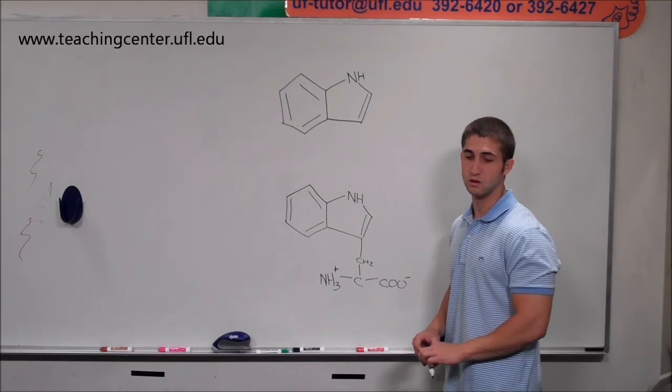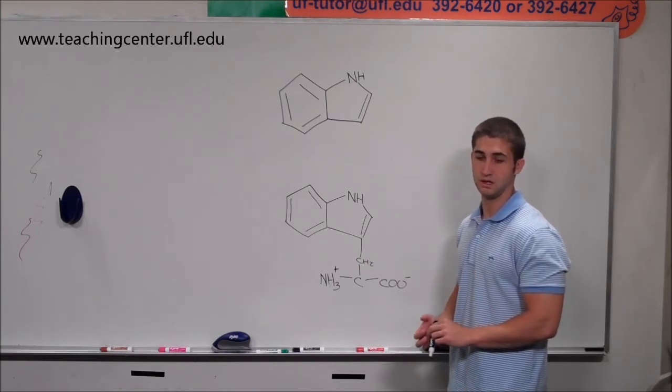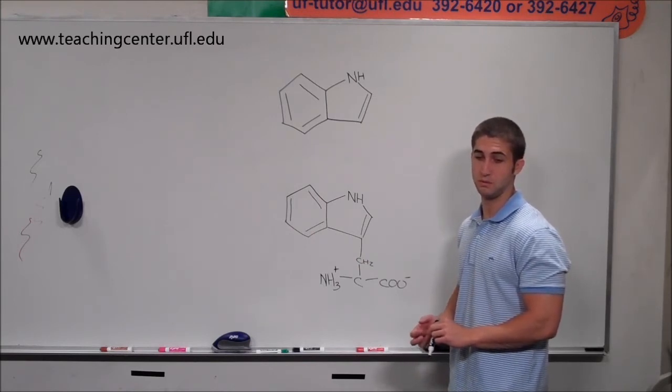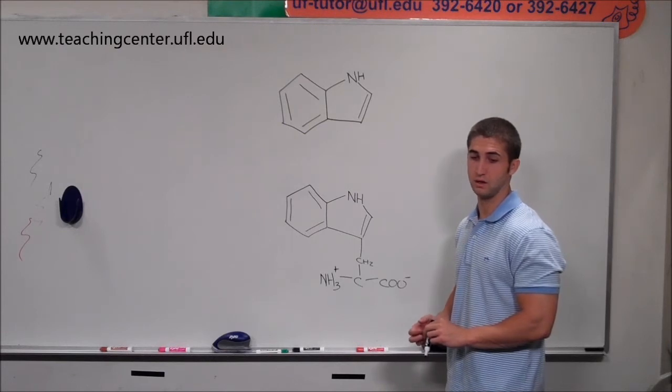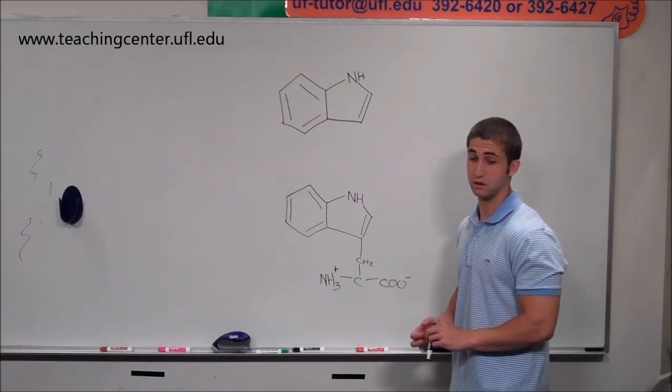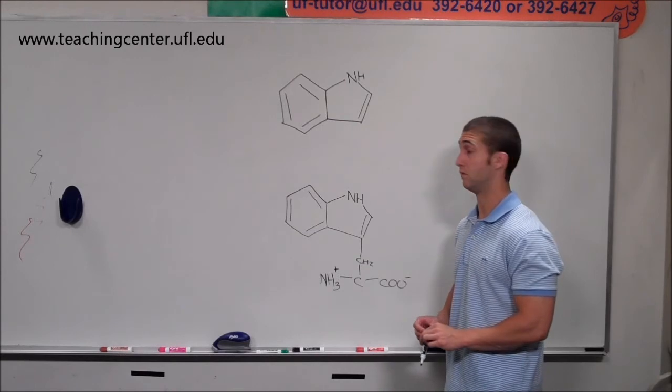All right, this is question number 9 from Dr. Long's Review. It says that at pH 7, tryptophan crosses a lipid bilayer at about 1,000th the rate of indole, a closely related compound. Suggest an explanation for this.